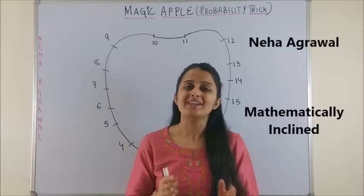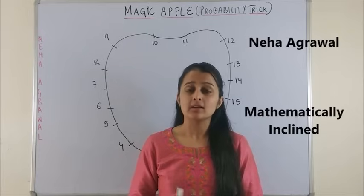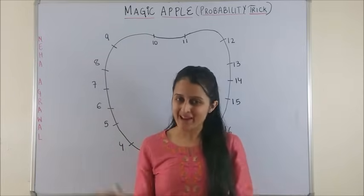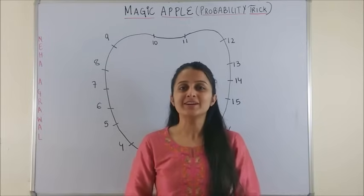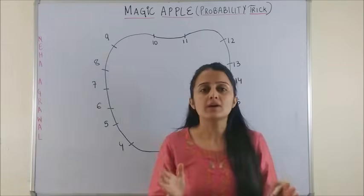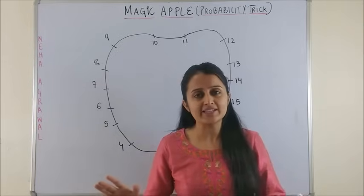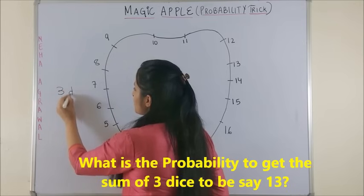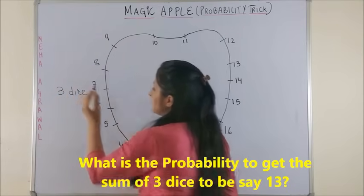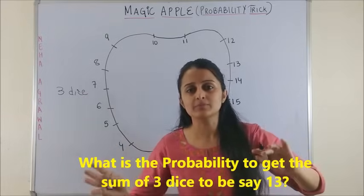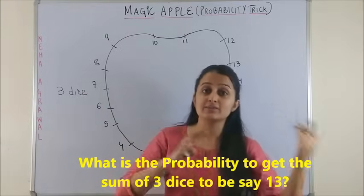Hi everyone, welcome to Mathematically Incline. Let's discuss the probability trick with the Magic Apple. Yes, you heard that right! You come across this question so many times: when three dice are rolled, what is the probability of getting the sum to be, let's say, 13 or 15?